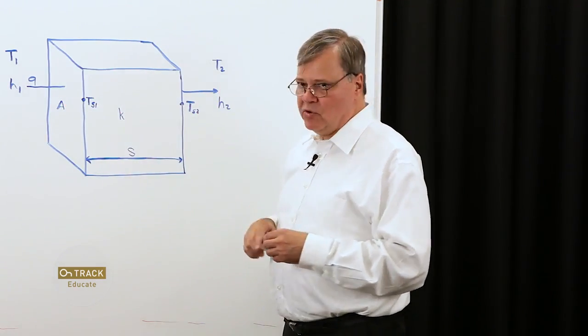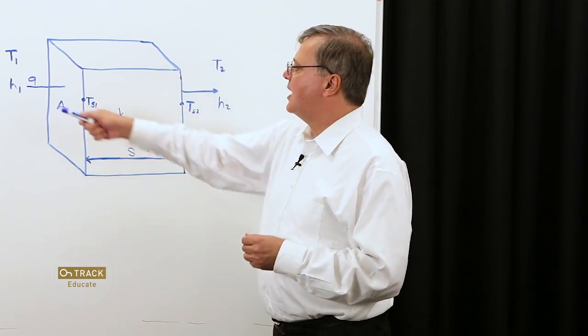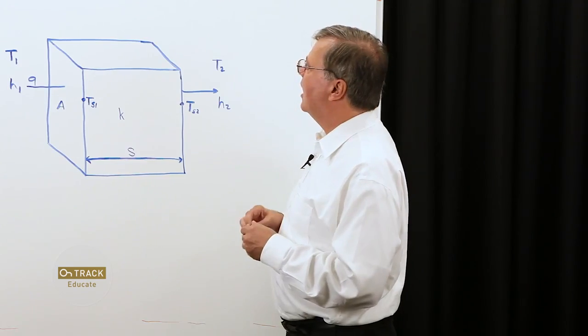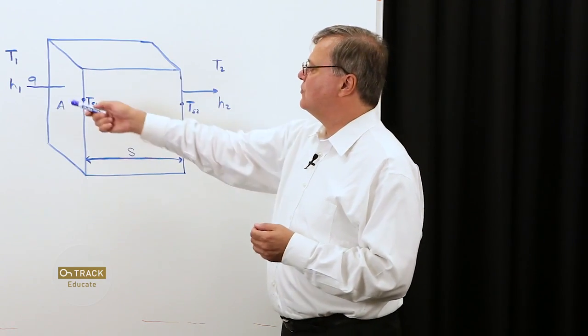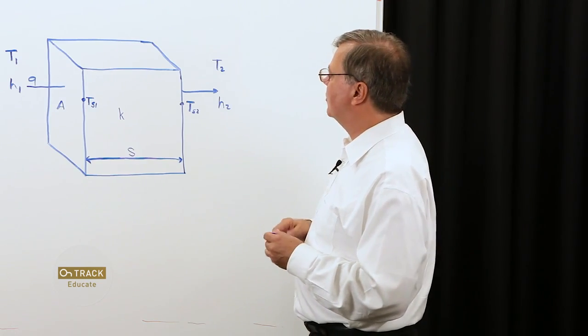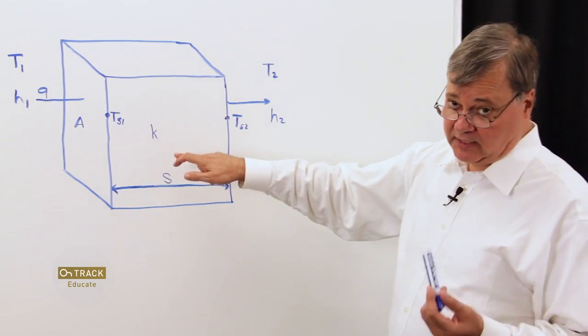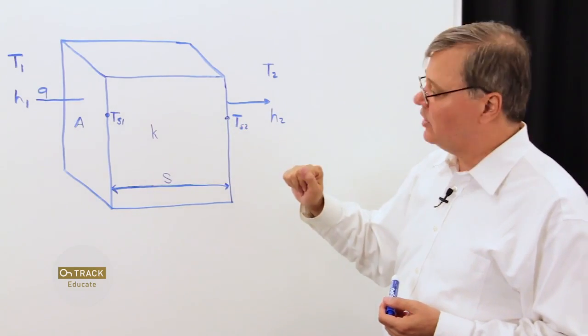T1 and T2 is the temperature differential across the system. H1 is my heat transfer coefficient for region 1. H2 is the heat transfer coefficient for region 2. K is my thermal conductivity of my solid material.